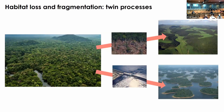Habitat loss and fragmentation are two twin processes that tend to occur simultaneously. Habitat loss is related to the habitat amount — the habitat being converted to other human land use types. Habitat fragmentation is related to configuration. Here we have the example of deforestation causing what I call terrestrial fragmentation, and hydroelectric dams, whose construction creates insular landscapes.